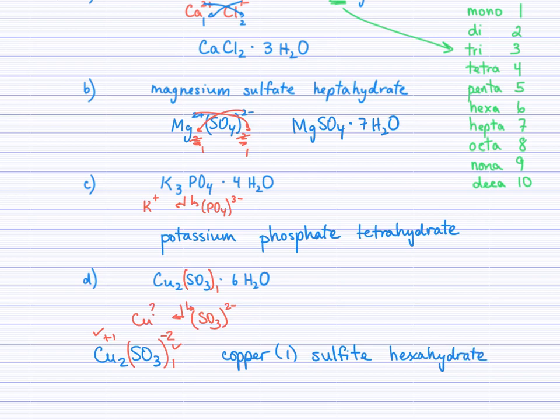And we'll do a lab later in the course involving hydrates. Now, if you chose to call the copper charge X, then you would have filled in a negative 2 here, and your equation would have looked like this. 2X plus 1 times negative 2 equals 0, 2X minus 2 equals 0, 2X equals 2, and we divide by 2 at the end, X equals 1. And so you'll see that that is the original 1 that we determined.